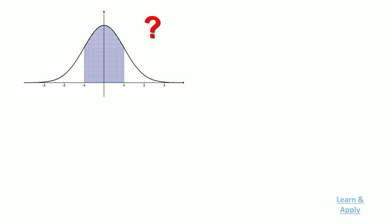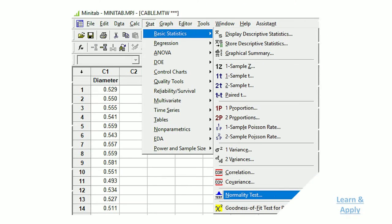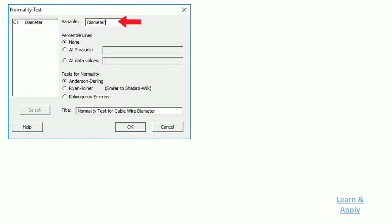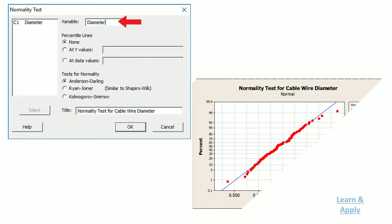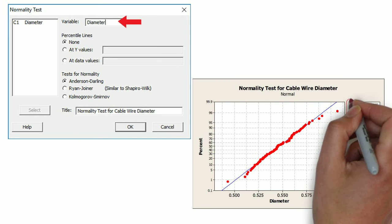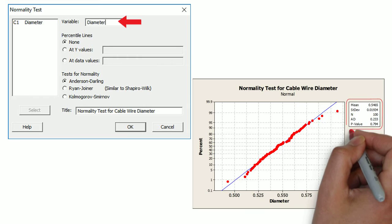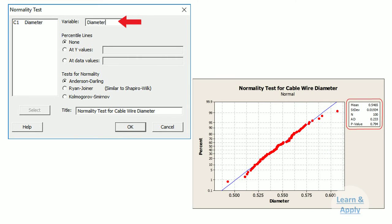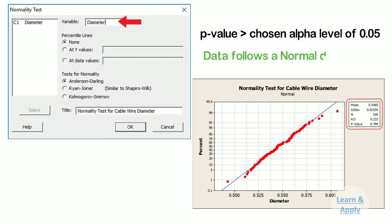To conduct a normality test, select Stat, Basic Statistics, and then Normality Test. In variable, select diameter. The test results indicate whether you should reject or fail to reject the null hypothesis that the data came from a normally distributed population. From this graph, we can see the p-value for the Anderson-Darling normality test of the cable diameter data is 0.794. This value is greater than the chosen alpha level of 0.05, indicating that the data follows a normal distribution.